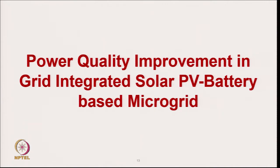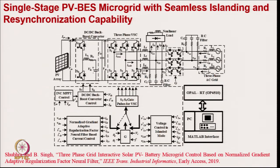Coming to power quality improvement in grid-integrated solar PV based microgrid with a typical single-stage PV based microgrid system. We have a solar PV array with a single stage and a buck-boost converter for the battery. This buck-boost converter allows maximum power tracking by controlling the DC link voltage, so one converter can be eliminated and the battery voltage can be at optimum voltage. Under unbalanced load conditions, second harmonics in the DC link are prevented from flowing into the battery. The total system can be synchronized to the grid when grid is available and provide power to the local load, which may include linear and non-linear loads.